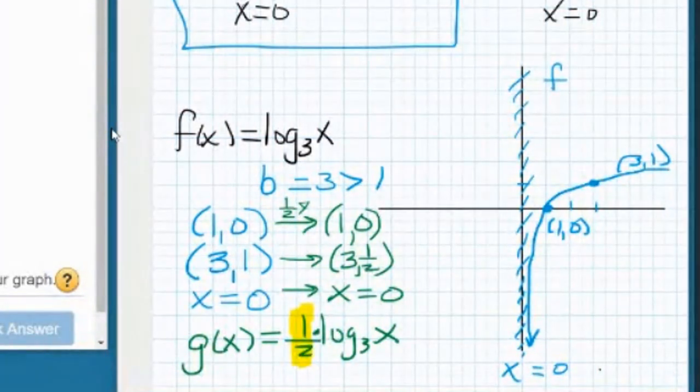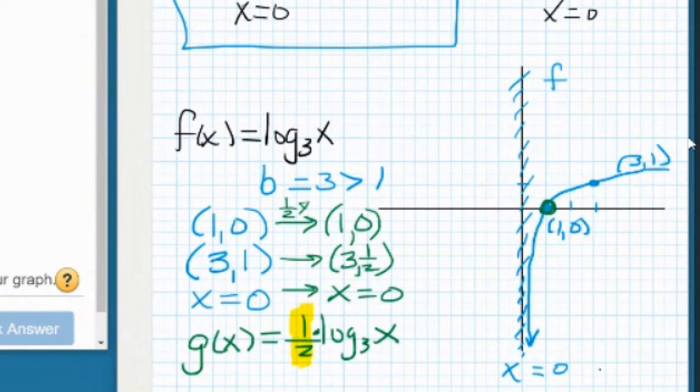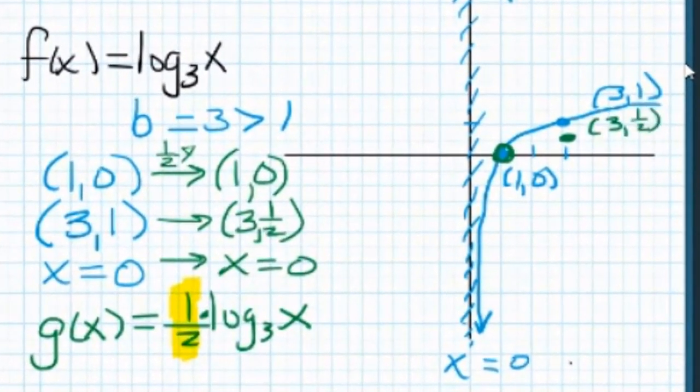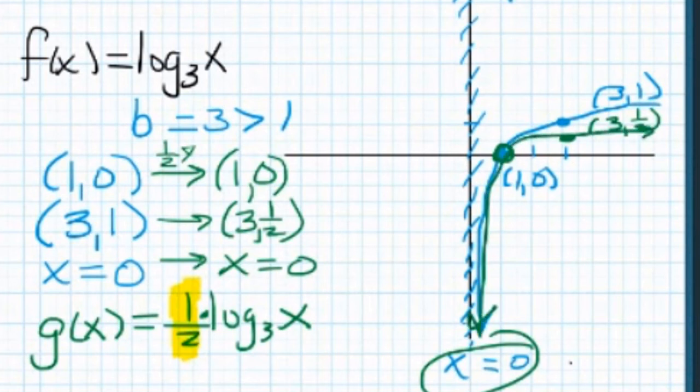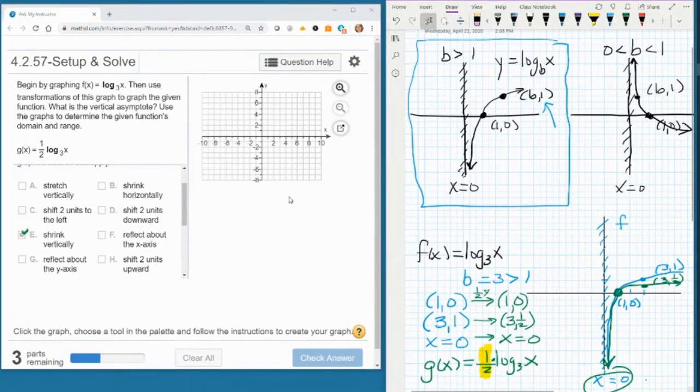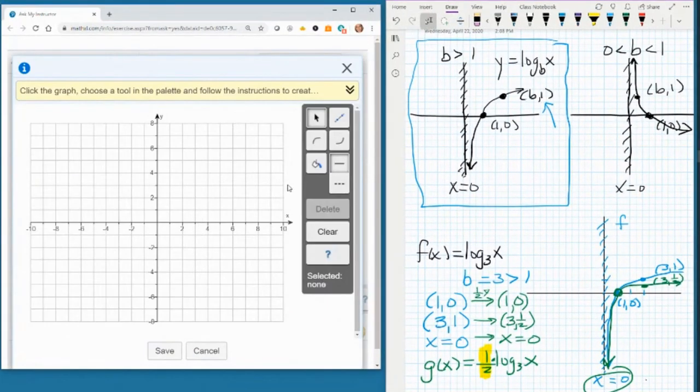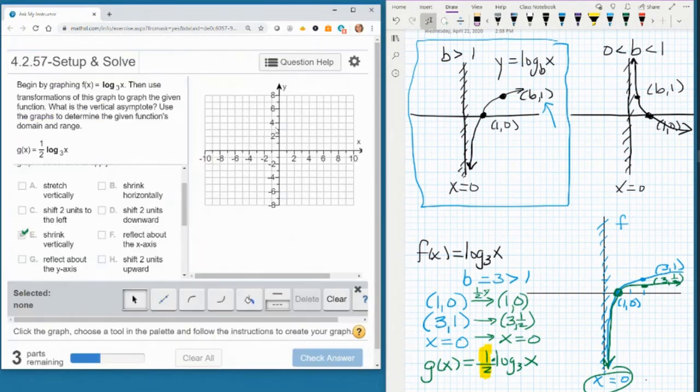So and then x = 0 is not affected because we're only changing y values and that's an x value. So that asymptote is going to stay exactly the same. So our function g is going to go through (1, 0). It's going to go through (3, 1/2), which is a little bit compressed closer to the x-axis. It's still going to have the same x = 0 asymptote and it's going to be the same type of shape, just squished a little closer to the x-axis.